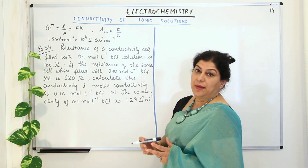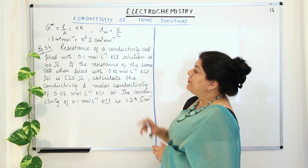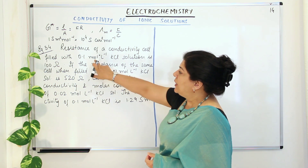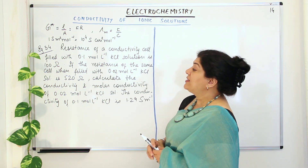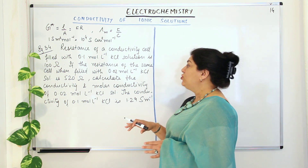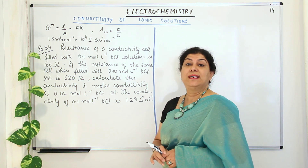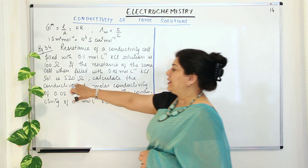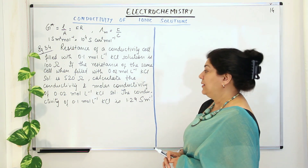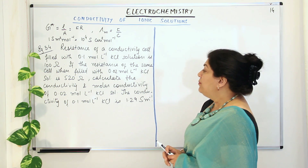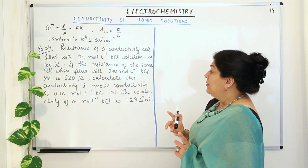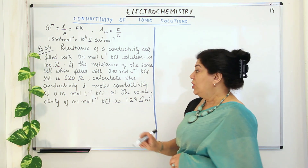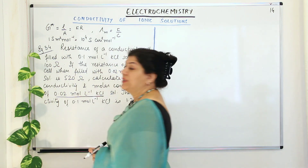The first question is example 3.4. The resistance of a conductivity cell filled with 0.1 mol per liter of KCl solution is 100 ohms. The resistance of the KCl solution has been changed from 100 ohms to 520 ohms. You have to calculate conductivity (kappa) and molar conductivity (lambda m) of the 0.02 mol per liter KCl solution.